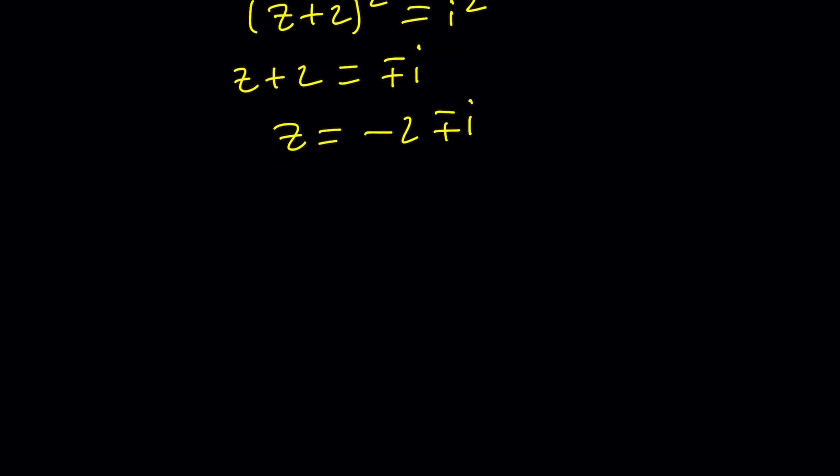Make sense? Now, suppose we go with z equals negative 2 plus i. Then I'm supposed to evaluate z squared minus 20 over z, right? So it's going to be like this.